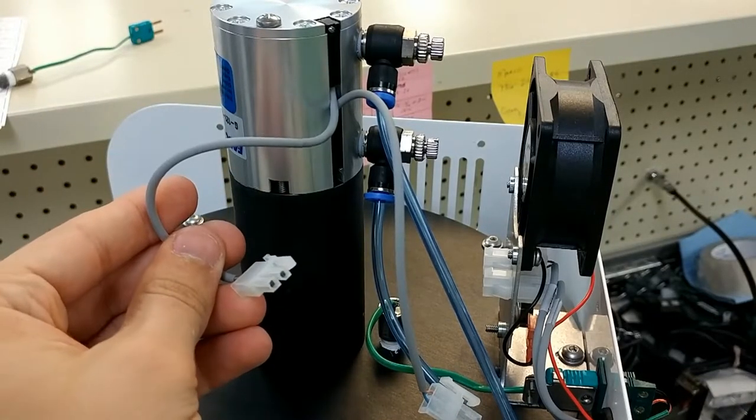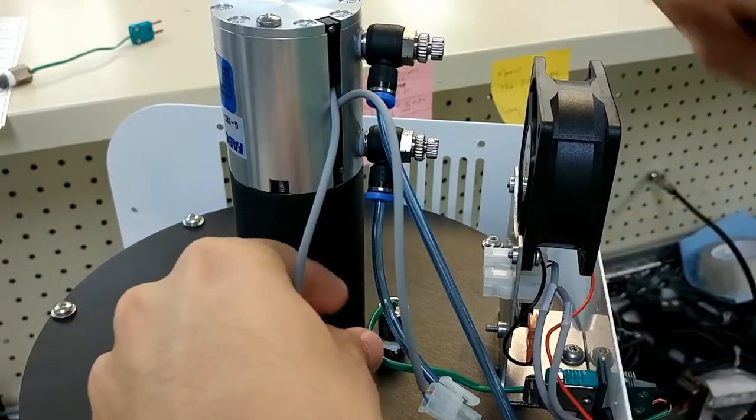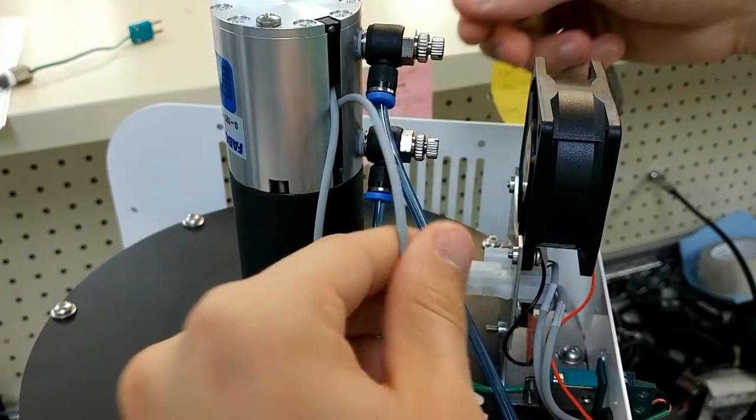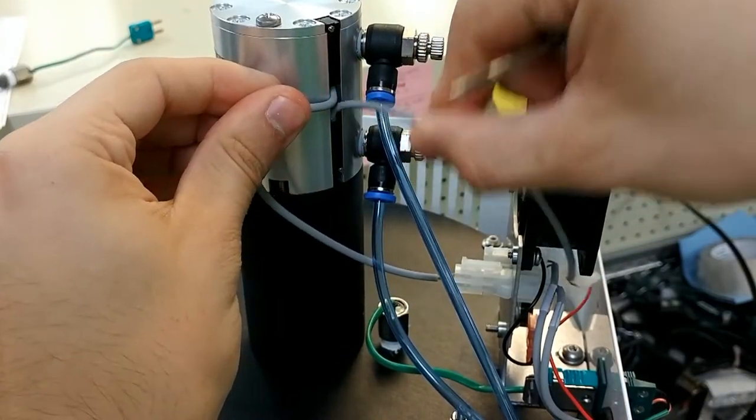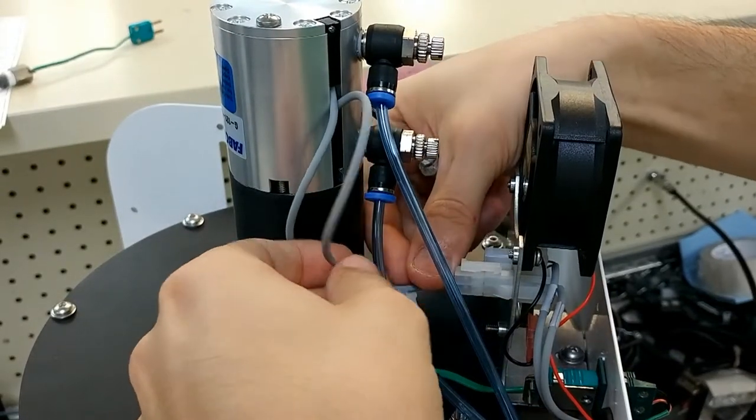To finish off, take the upper pressing sensor and connect it to the cable labeled upper on the pressing fan. Once connected, take the lower pressing sensor and connect it to the cable labeled lower on the pressing fan.